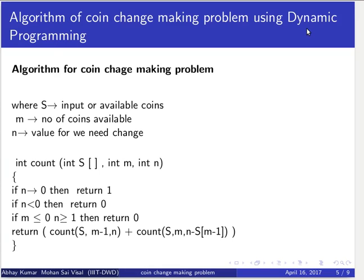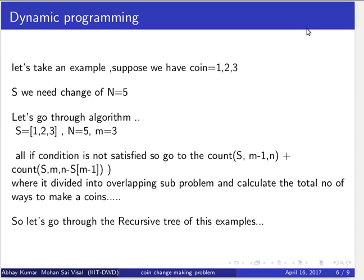Let's try this through an example. Suppose we have coins 1 rupee, 2 rupees, and 3 rupees, and we need change for n equals 5. Through the algorithm, there are three parameters: S equals {1, 2, 3}, N equals 5, and M equals 3. Since no base condition is satisfied in the first step, we go to count(S, M minus 1, N) plus count(S, M, N minus S[M-1]). Let's understand this better with a recursive tree.